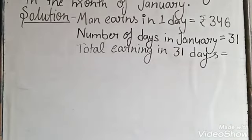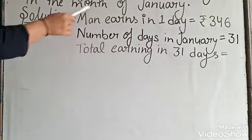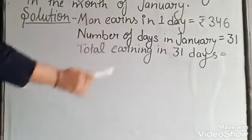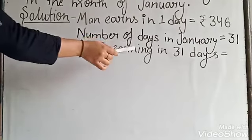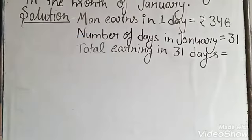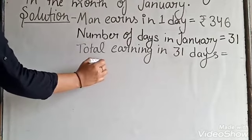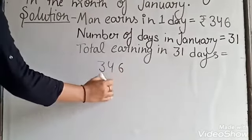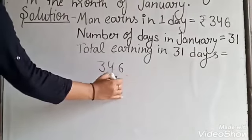Total earning in 31 days. We need to multiply the money he earned in one day with the total number of days. He took January 31 days. Let us multiply 346 multiplied by 31.